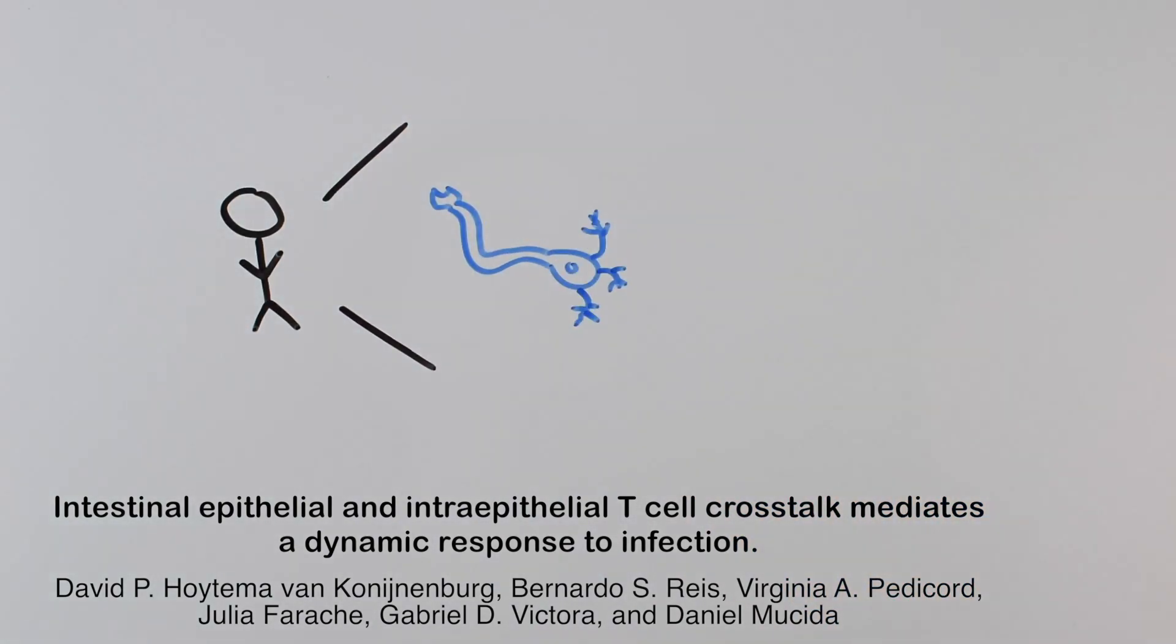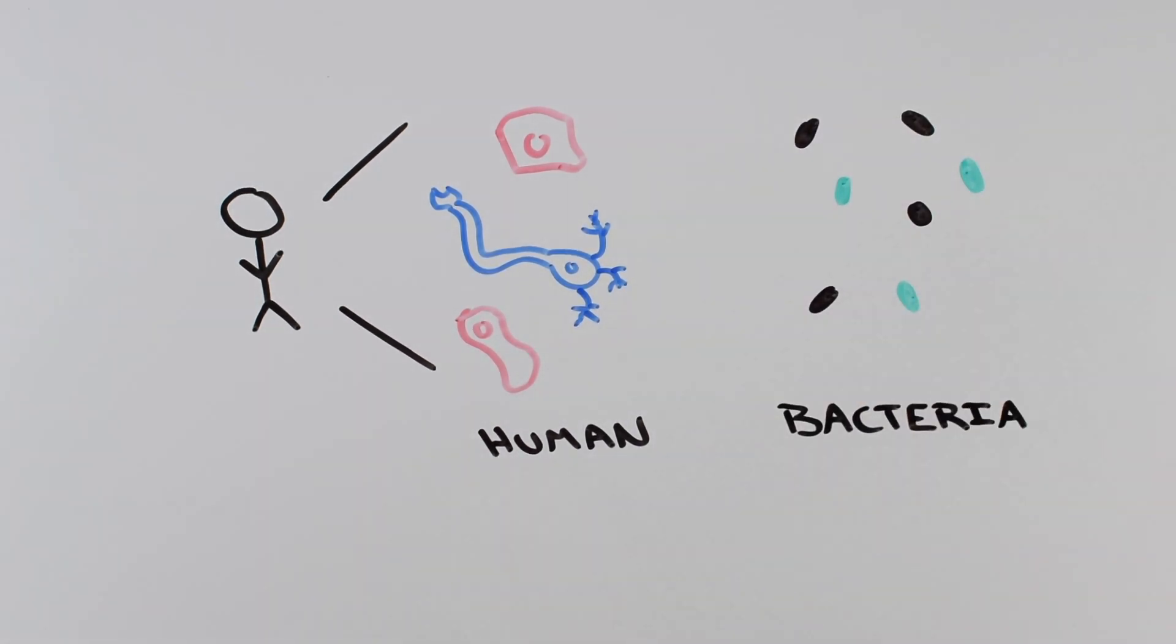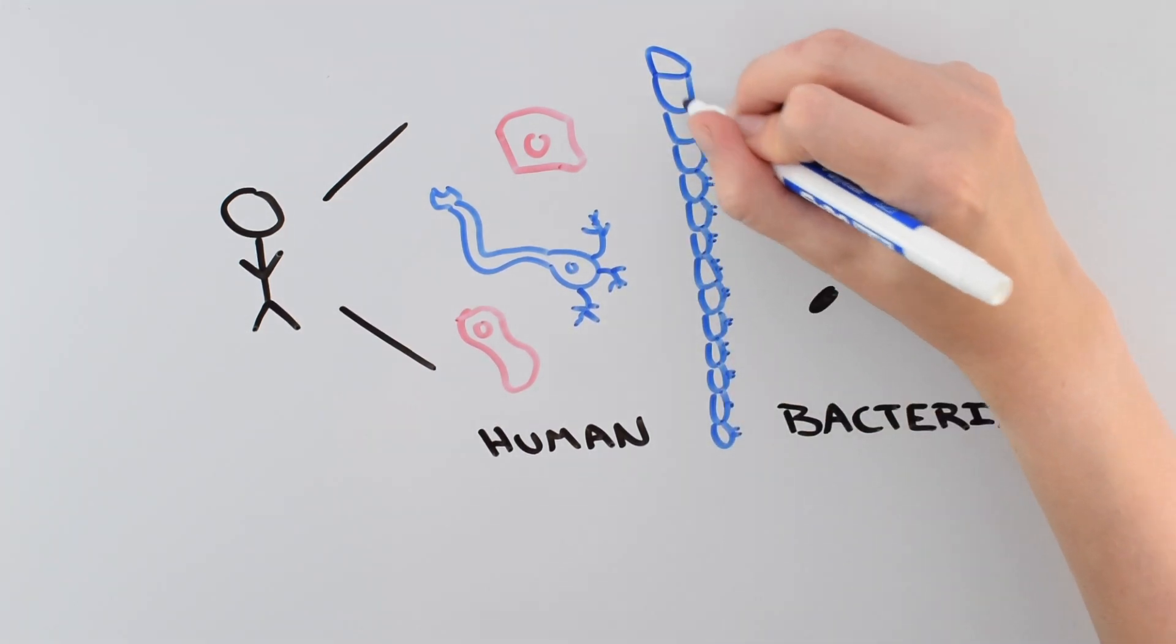If you separated the human body into individual cells, over 50% of them would be bacteria. There are around 10 trillion cells in the human microbiome, and the only thing between all of those bacteria and our vital organs is a single layer of intestinal cells.